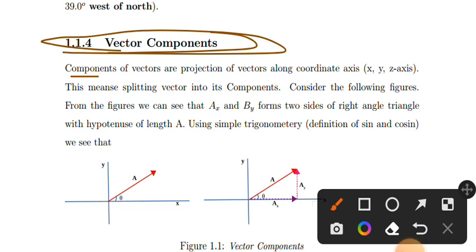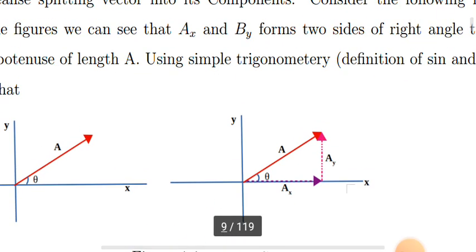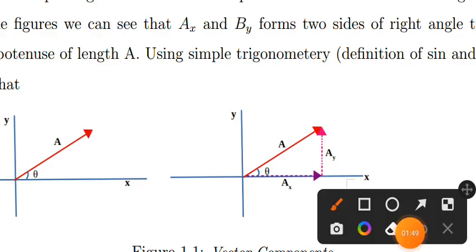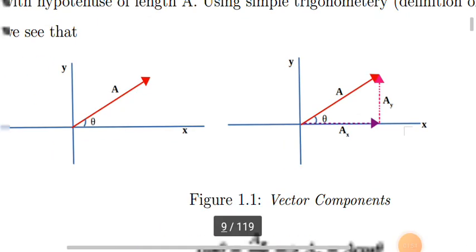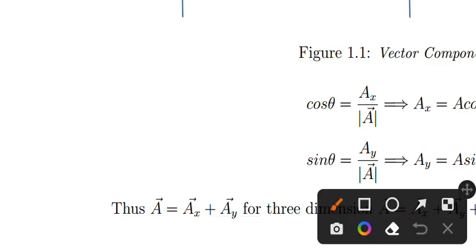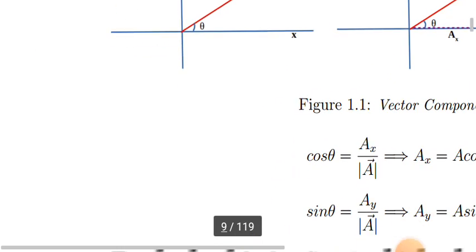Components of vectors are the projection of vectors along coordinate axes x, y, and z. When you split a vector into components, you're essentially projecting it onto the coordinate axes. Consider the figure - this vector can be split into components.